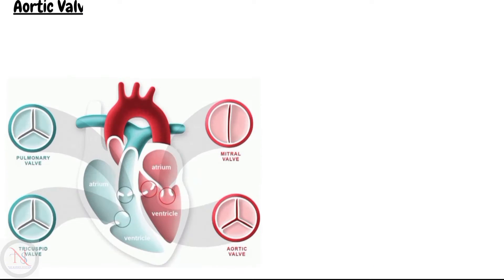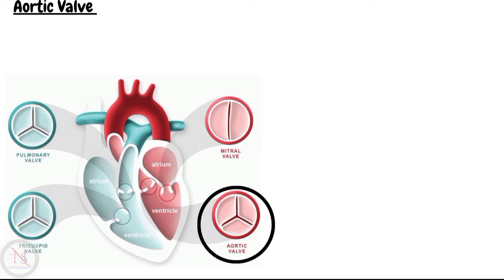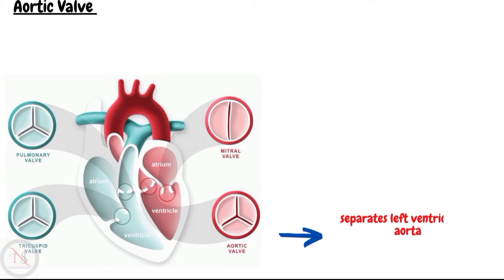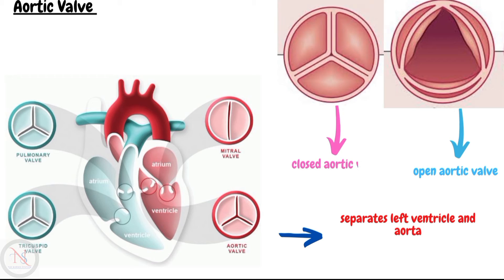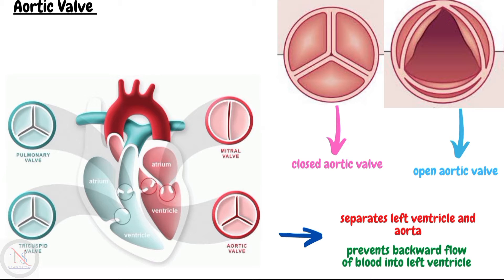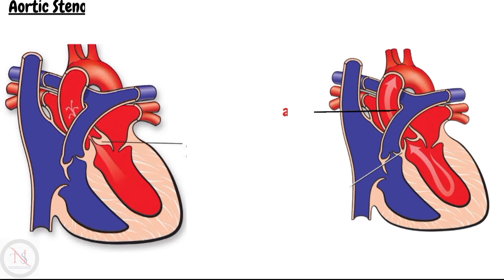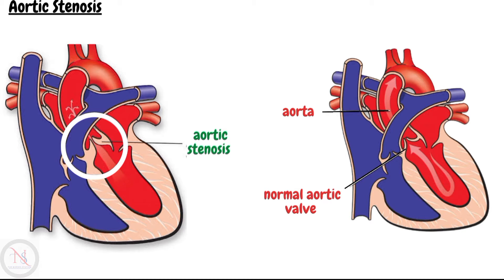The aortic valve is one of the four valves that control blood flow in the heart. It separates the left ventricle and the aorta. When the heart contracts, the aortic valve opens and lets blood flow from the left ventricle into the aorta. When the heart relaxes, the aortic valve closes to prevent blood from flowing backward. Aortic stenosis occurs when there is narrowing or stricture of the aortic valve, causing resistance to blood flow.